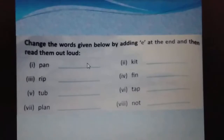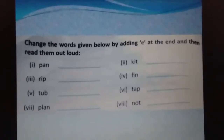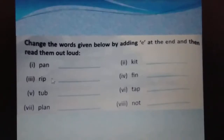Next word is K-I-T — 'kit.' When we add E, the word becomes 'kite.' Kite means patang. Next word is R-I-P — 'rip.' When we add E, the word becomes 'ripe.' Ripe means paka hua — fully grown/ready.